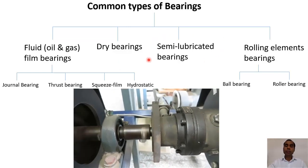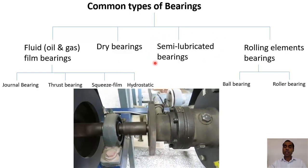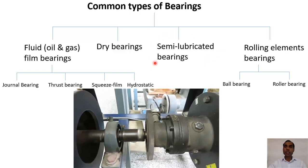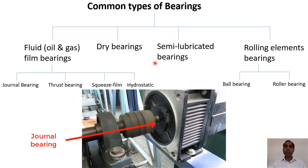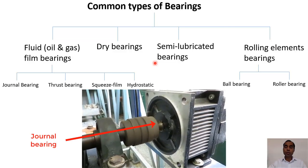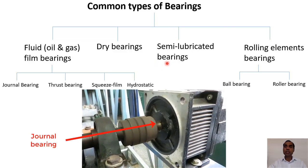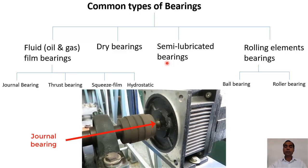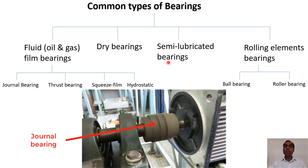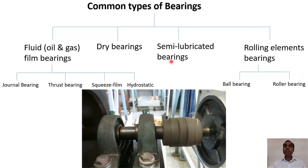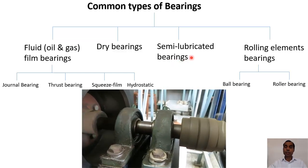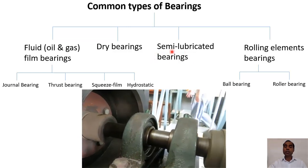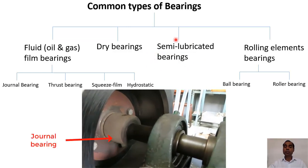Semi-lubricated bearings address the fact that many solids, especially structural materials that can bear load, will give a high coefficient of friction. However, some materials — for example brass — can be used with lightly lubricated conditions, where very little lubrication is good enough for these kinds of bearings.